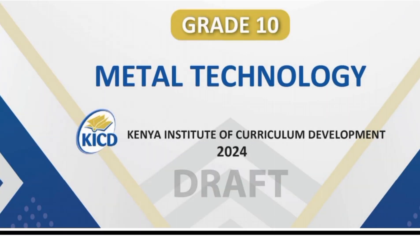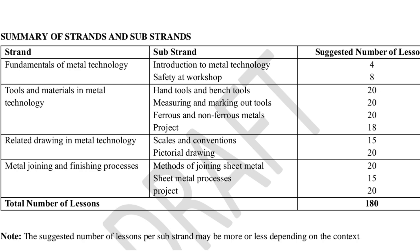Metal technology is another learning area. The first strand is fundamentals of metal technology, with substrands on introduction to metal technology and safety at work. The second strand is tools and materials in metal technology, covering hand tools and bench tools, measuring and marking out tools, ferrous and non-ferrous metals, and a project. The third strand is related drawing in metal technology, with substrands on scales and conversions and pictorial drawing. The fourth strand is metal joining and finishing processes, covering methods of joining sheet metal, sheet metal processes, and a project — all in 180 lessons.